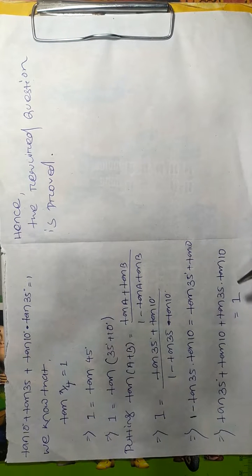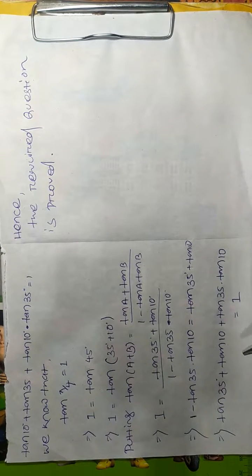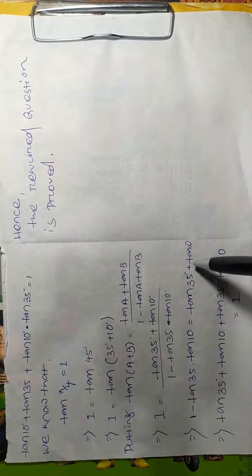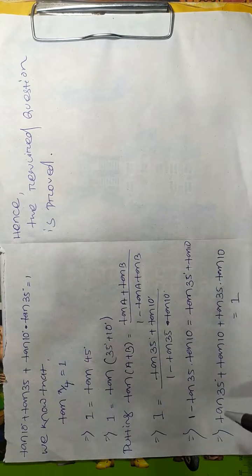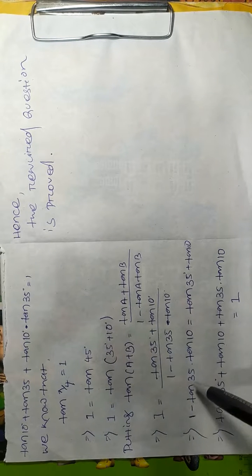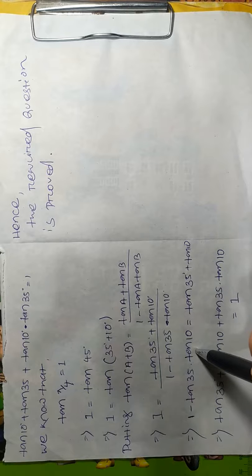Tan 35° + tan 10° plus tan 35° is present here, and we have to move -tan 35° × tan 10° to the opposite side of equals.